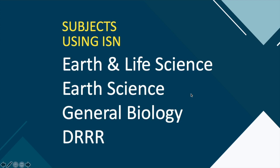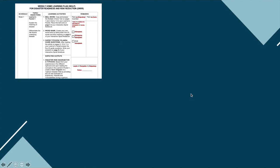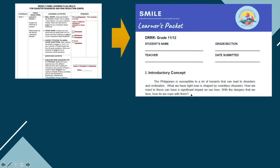Kahit anong subject mo, maaari mong gamitin ang ISN bilang student's portfolio — kahit ito ay Earth and Life Science, Earth Science, General Biology, o DRRR. Basahin mabuti ang WHLP. Ang lahat ng mga gawain sa WHLP ay mahahanap sa learner's packet. Kung ano ang nakalagay sa WHLP, yun lamang ang iyong gagawin — hindi mo kailangan sagutan lahat ng mababasa at mga gawain na nasa learner's packet. Halimbawa: first learning activity, gumawa ng bell word — basahin ang instruction, hanapin ang page sa learner's packet. Pangalawa, word bank — basahin ang instruction, alamin ang iba't ibang words na makikita sa word bank sa learner's packet. Pangatlo, sagutan ang Super Typhoon Yolanda guide questions na mababasa rin sa learner's packet.